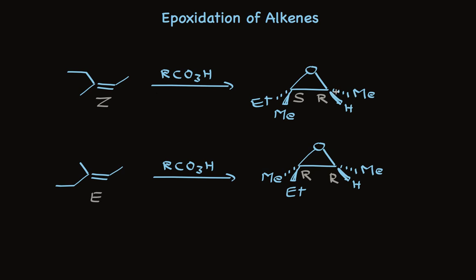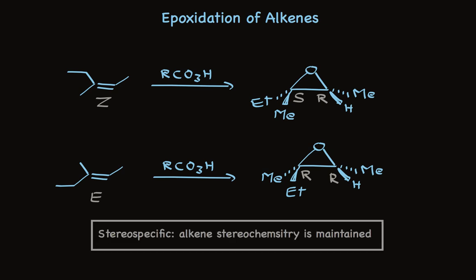When we start with the E-stereochemistry, the ethyl group and methyl are on opposite sides of the double bond, and they end up on opposite sides of the ring in the product. This reaction is stereospecific because the stereochemistry of the alkene dictates the stereochemistry of the product.